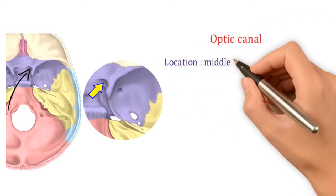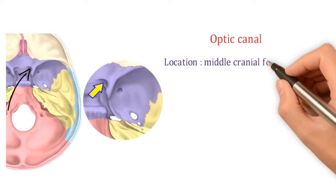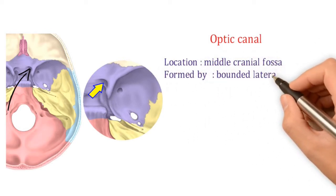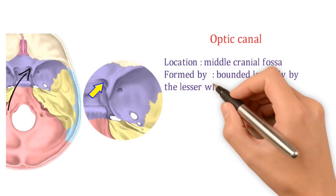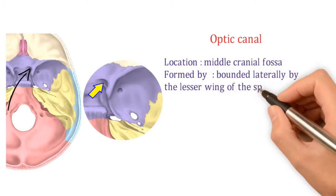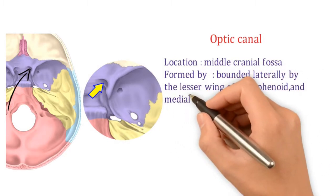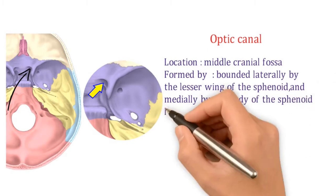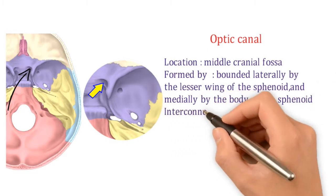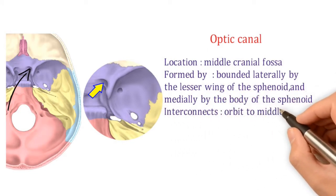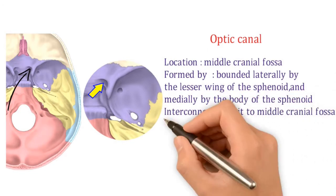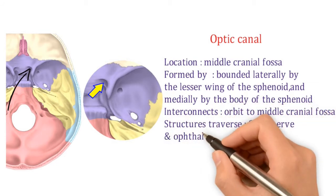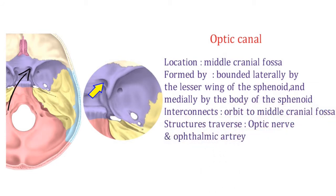The optic canal is located at the apex of the orbit, bounded laterally by the lesser wing of the sphenoid and medially by the body of the sphenoid. It interconnects the orbit to the middle cranial fossa and transmits the optic nerve and ophthalmic artery, which is a branch of the intracranial portion of the internal carotid artery.